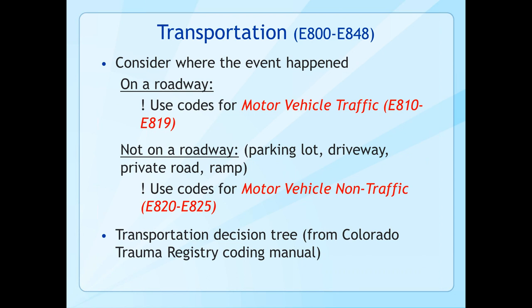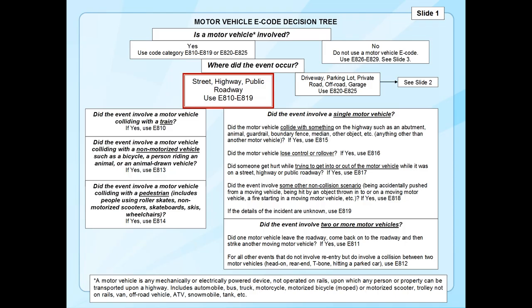A pedestrian is a person on foot or someone operating a pedestrian conveyance, and also includes people standing by the side of the highway changing a tire or fixing their motor. You don't have to be walking — you just have to not be in or on a motor vehicle. Pedestrian conveyance is any human-powered device by which a pedestrian could move other than by walking. People using pedestrian conveyances who become injured must be identified as pedestrians when assigning the fourth digit for transportation external cause codes.